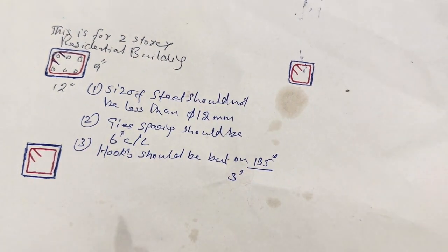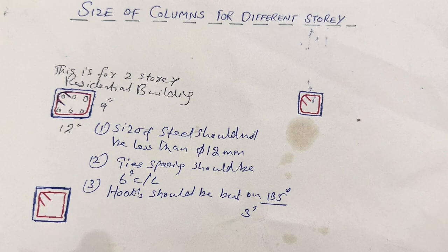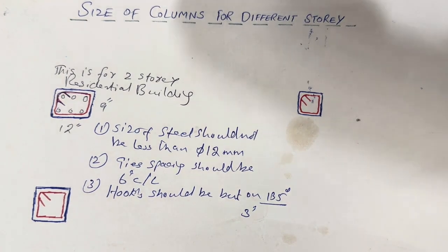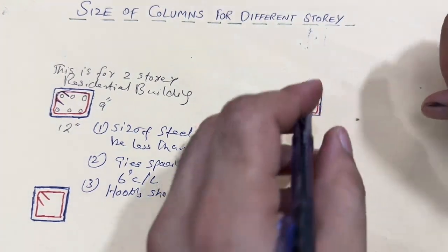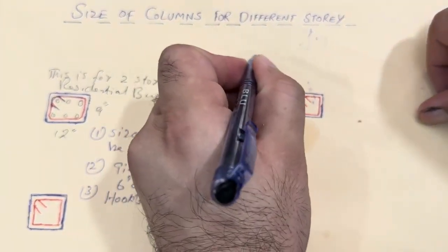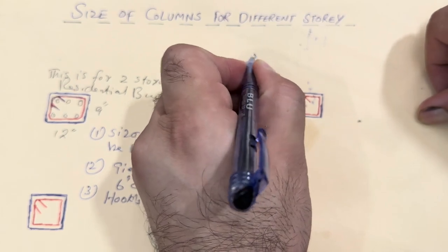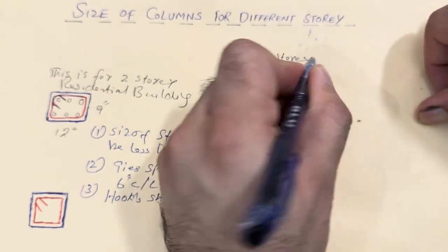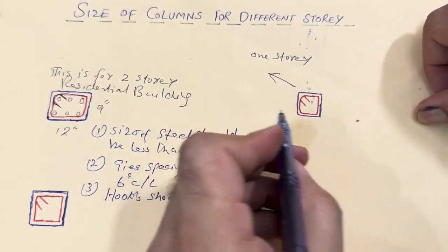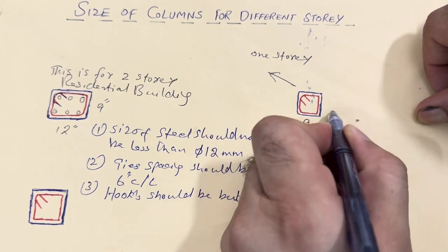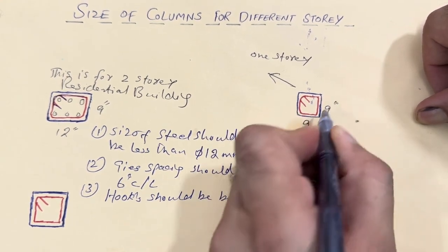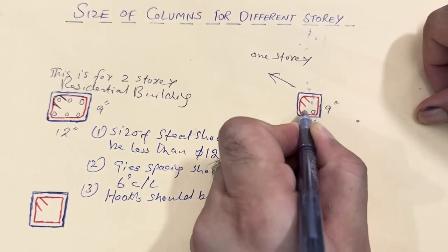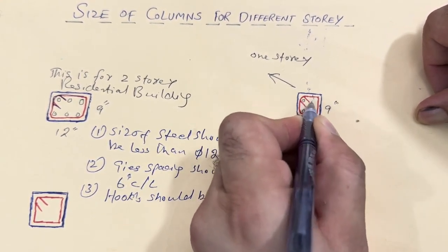The hook length should not be less than 3 inches. This is for a normal residential building up to 2 storeys — ground floor plus first floor. For one storey residential building, the size should not be more than 9 by 9 inches with 4 numbers of steel rods.